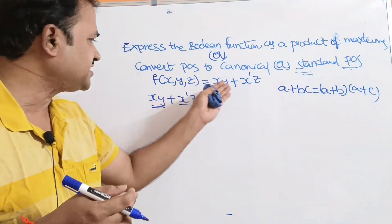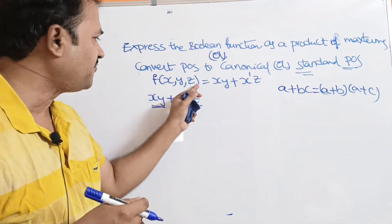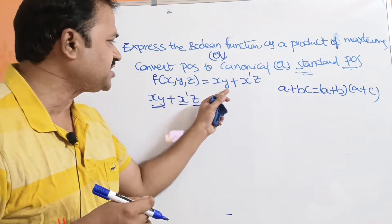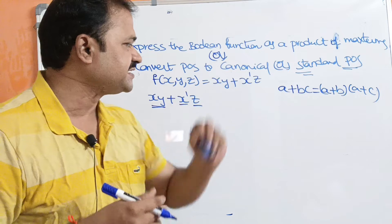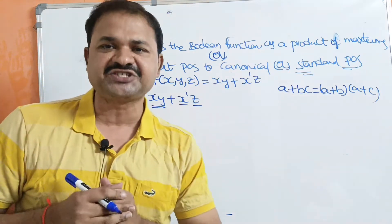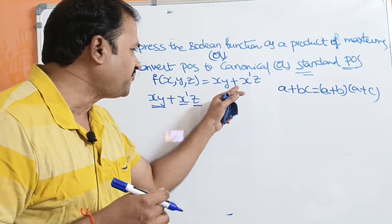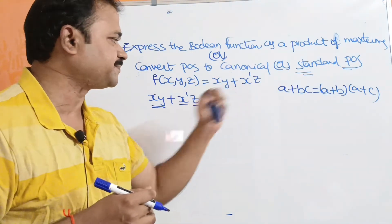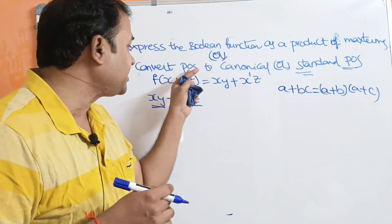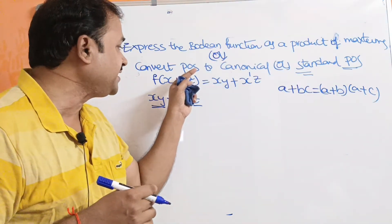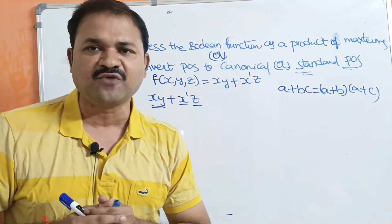The function given is f(x, y, z) = xy + x'z. This is in the form of sum of products. But our input should be in POS — product of sum. So we have to convert this sum of product into product of sum.